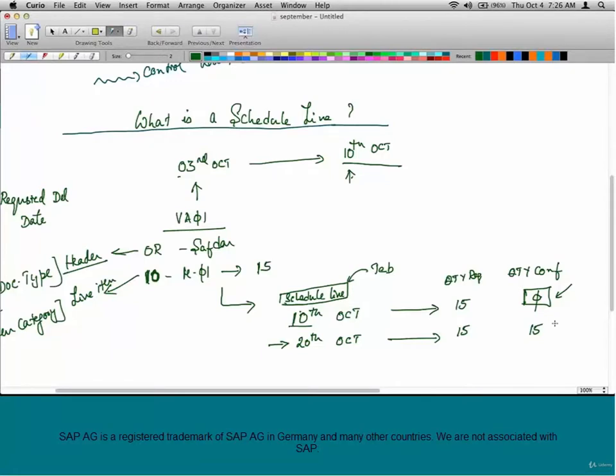So, anybody can understand by just looking at the schedule lines, the customer originally asked for a quantity of 15 by the 10th of October and the quantity could not be confirmed by the 10th because we see a 0 there. However, on the 20th of October, the quantity confirmed is set to 15.